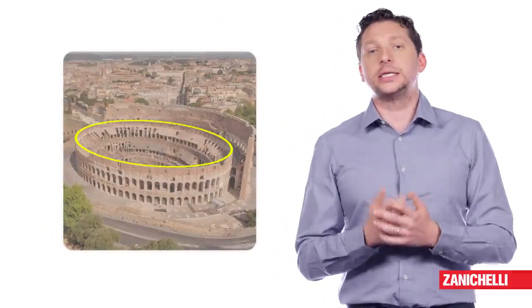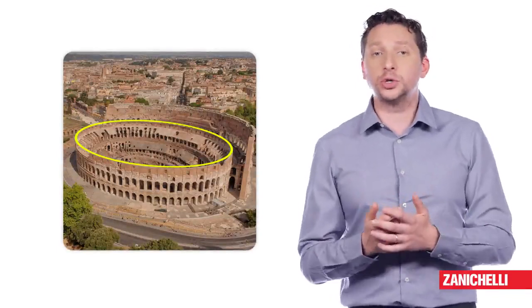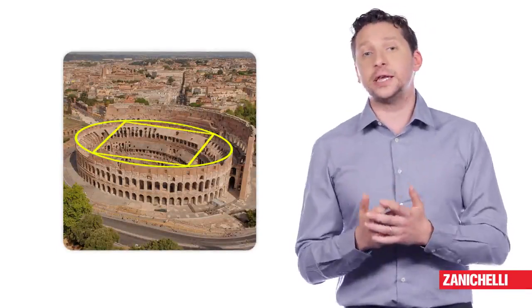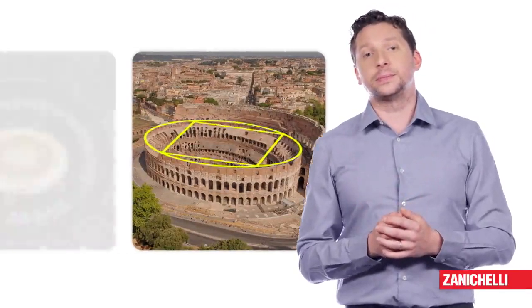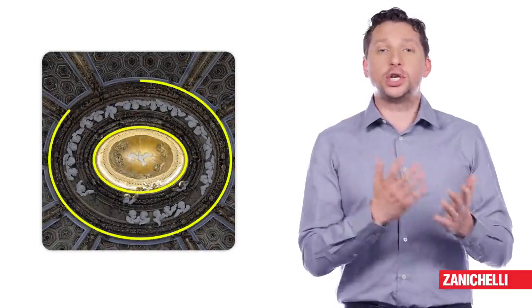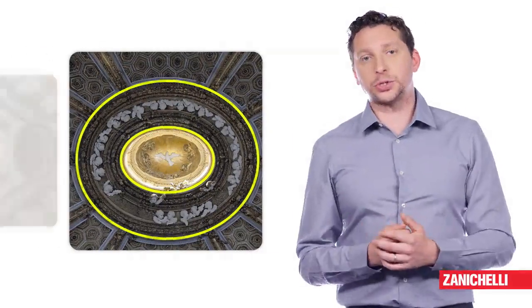But in Roman architecture the elliptical plan was especially used — just consider amphitheatres, designed to seat as many viewers as possible around a rectangular field. In Renaissance architecture we find them in domes, vaults and bows.